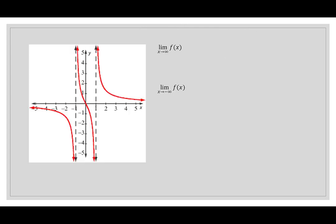Let's look at limits at infinity. Looking at the graph of this rational function, as x goes to infinity (going right), f(x) gets closer and closer to the x-axis, which is 0. On the left side, going toward negative infinity, f(x) also approaches 0.